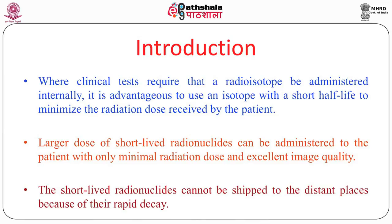Though these isotopes are very good and can give examination results not possible with other isotopes, we cannot transport them. That is why, when a cyclotron is at one location, fluorine-18 can go from one city to another or even from one country to another. But because of its short half-life, it still has certain limitations. Carbon, nitrogen, and oxygen simply cannot be used for distant transport because of their very short half-lives.